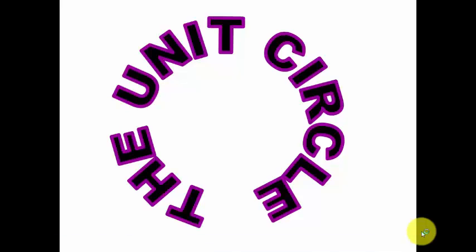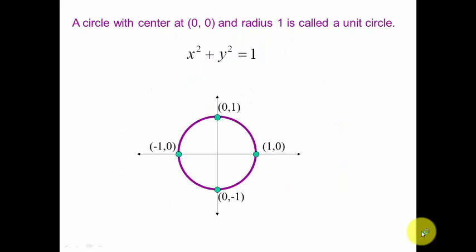Brief review of the unit circle and how it can help us remember exact values of trig functions. Remember the unit circle is a circle centered at (0,0) with a radius of 1 and its equation is x squared plus y squared equals 1.